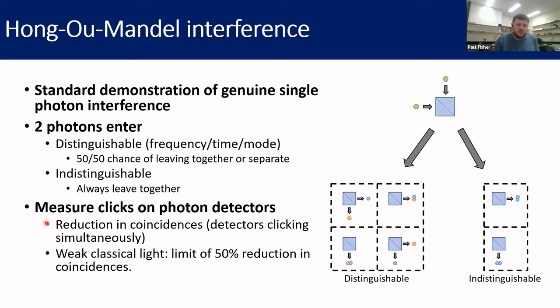As your photons go towards indistinguishability — usually by adjusting arrival time — you will see a reduction in the number of coincidences between your detectors.